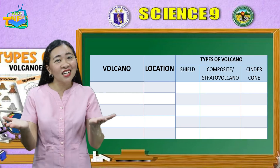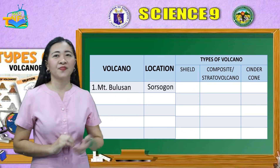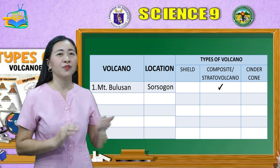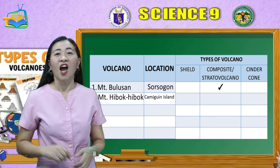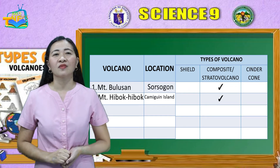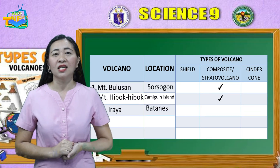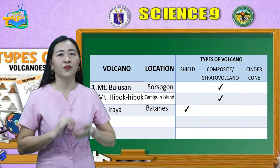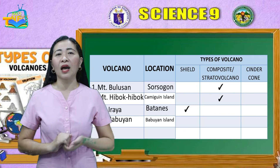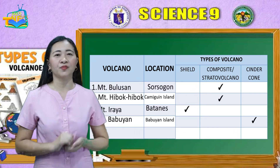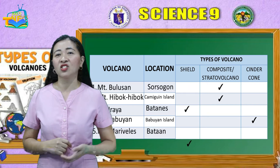Now let's take a look at your answers. Number 1: Mount Bulusan, located in the province of Sorsogon — classified as a stratovolcano. Number 2: Mount Hibuk-Hibuk, located in Camiguin Island — another stratovolcano. Number 3: Mount Iraya, located in Batan Island in the province of Batanes — classified as a shield volcano. Number 4: Mount Babuyan, located in the Babuyan group of islands — a cinder cone volcano. Number 5: Mount Maribelius in Batan Island, classified as a shield volcano.